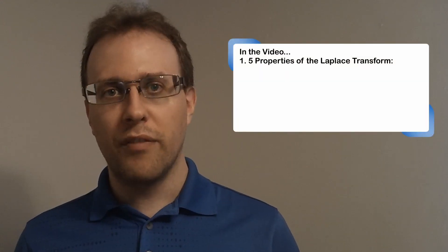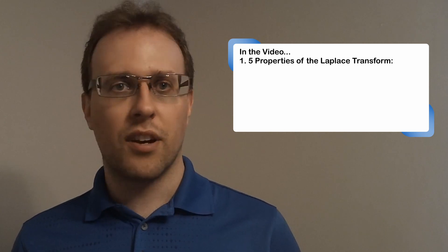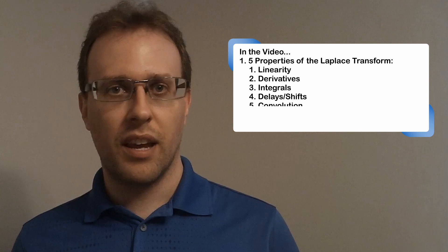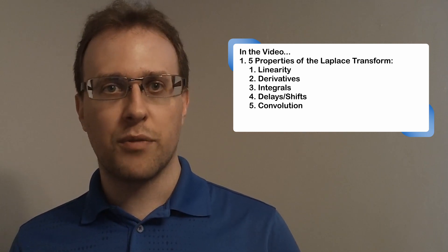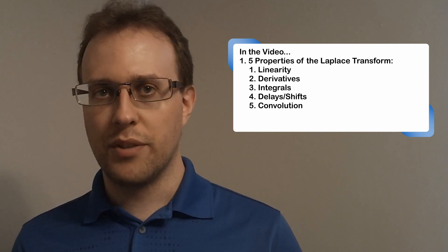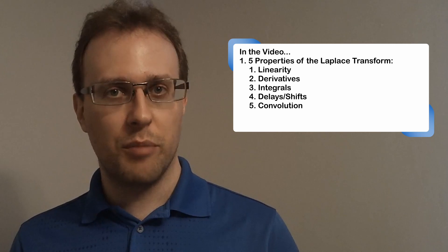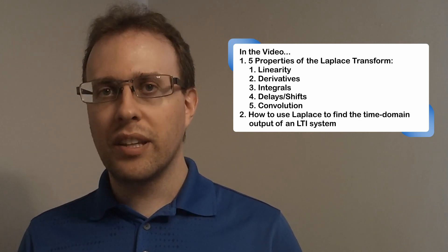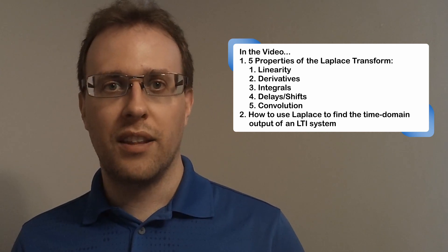In this video I'm presenting five important properties of the Laplace transform: linearity, derivatives, integrals, delays, and convolution. If you know these properties and have a Laplace transform table, then you can find many Laplace transforms and inverse Laplace transforms. The convolution property is especially important because you can use convolution in the time domain to calculate the output signal from an LTI system, and we'll get to that in this video.